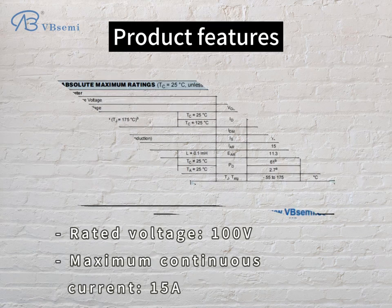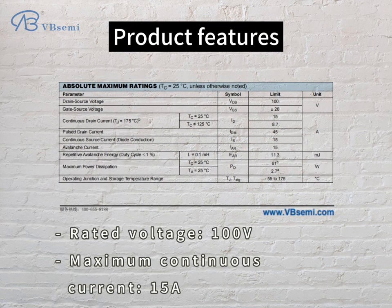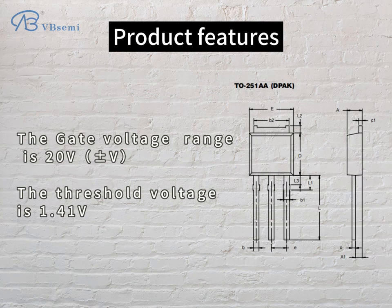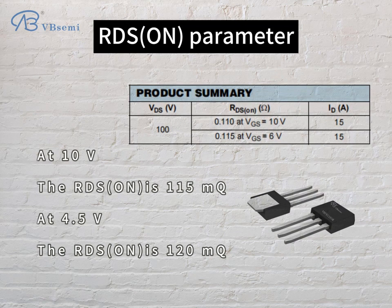Product features: rated voltage 100V, maximum continuous current 15A, gate voltage range ±20V, threshold voltage 1.41V. Rds(on) parameters: at 10V the Rds(on) is 115mΩ, and at 4.5V the Rds(on) is 120mΩ.